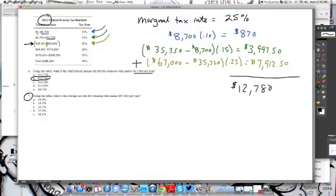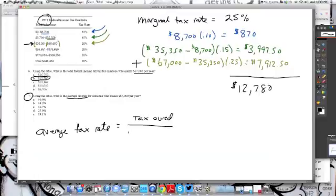Now, if we look at question seven, we want the average tax rate. So first of all, let's define average tax rate. And it's simply going to be the tax owed divided by the taxable income. And we're going to multiply this by 100 just to get it into a rate.